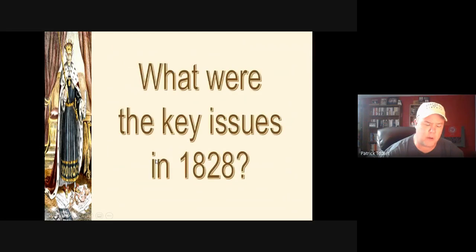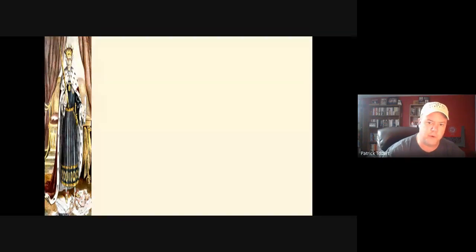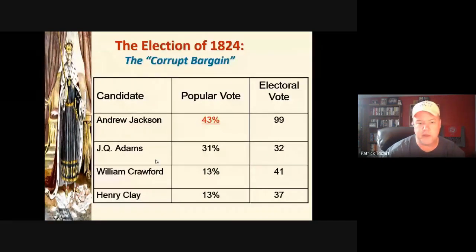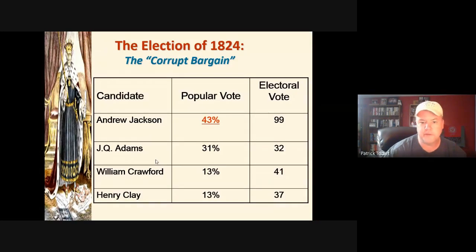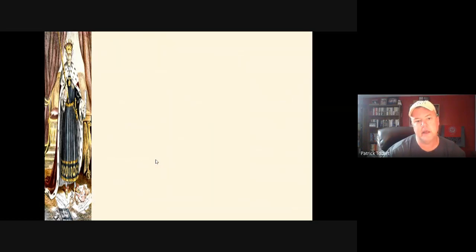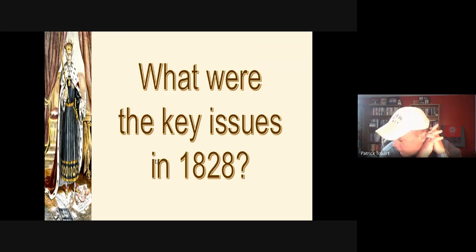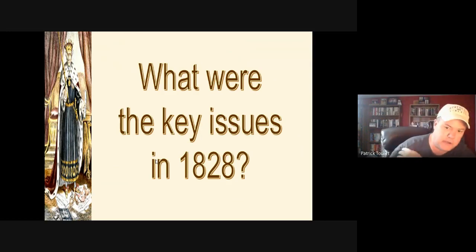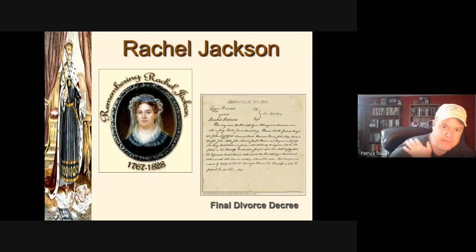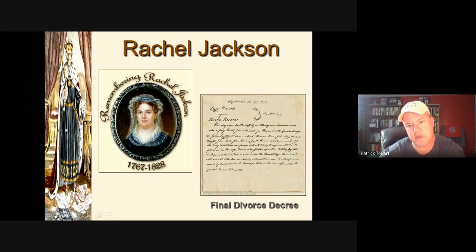Jackson's supporters cried foul, and for the next four years of John Quincy Adams's presidency — our sixth president — the opponents considered him an illegitimate president. Unfortunately for Adams, he was really not the right president for the times — more nationalist in a period when America was becoming more sectionalist — and he would be defeated in 1828.